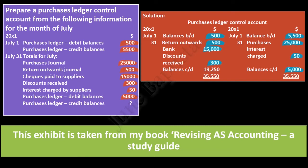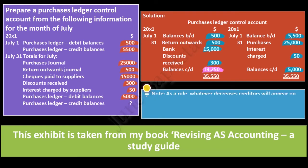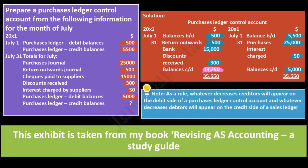On balancing this account, we get a credit balance of $19,250. As a rule, whatever decreases creditors will appear on the debit side of a purchaser's ledger control account, and whatever decreases debtors will appear on the credit side of a sales ledger control account.